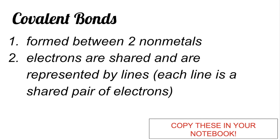Covalent bonds have two major characteristics. The first one is that they are formed between two nonmetals. Nonmetals are those elements found at the right side of your periodic table — those elements that are not very good conductors.